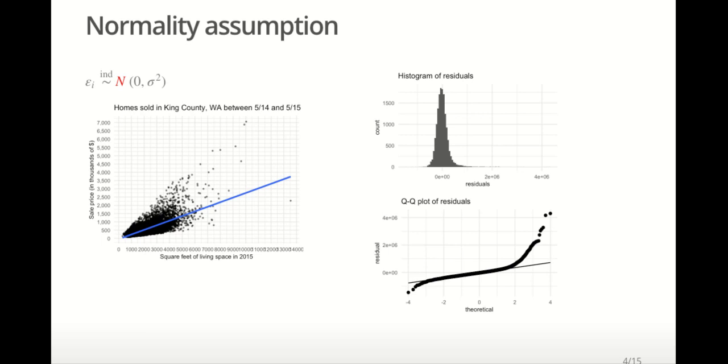The plot on the left shows the raw data and a simple linear model that uses square feet of living space to predict sales price. The plots on the right give us two ways to visually check the normality assumption. The first plot is a histogram of the residuals. We can see that the distribution has some observations stretched out far to the right. We refer to this as a right skewed distribution. This is not normal.